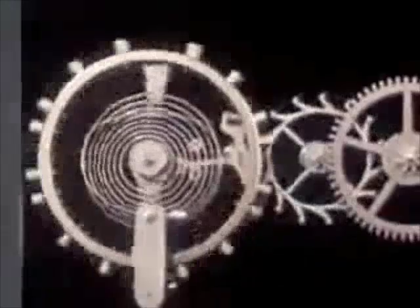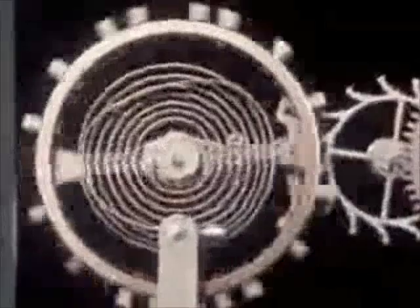Back and forth the balance wheel swings, controlled by its small coiled spring, the hairspring, in perfect rhythm. Each swing unlocks the escape wheel so it can give an extra push to a pallet jewel, and this is passed on to the balance wheel assembly to keep the watch ticking far more steadily than any beating heart.